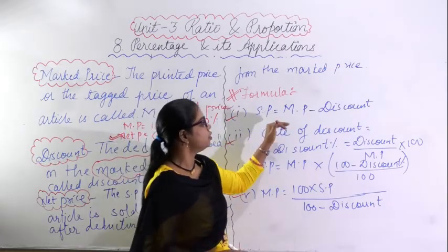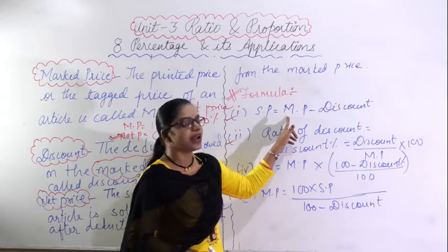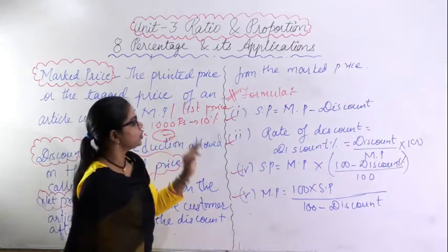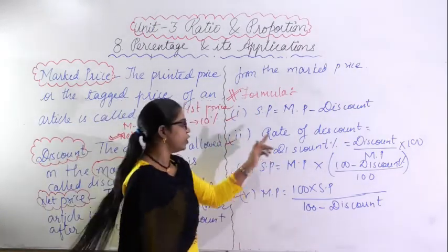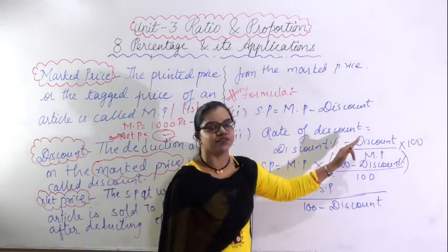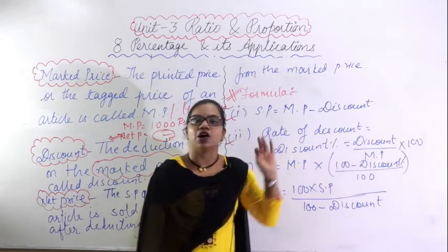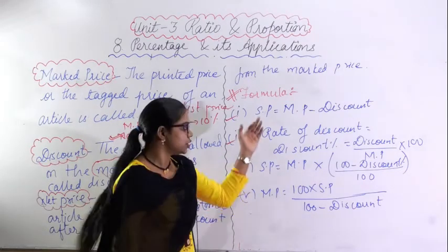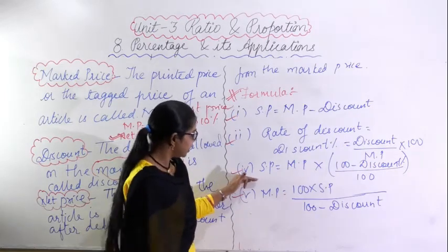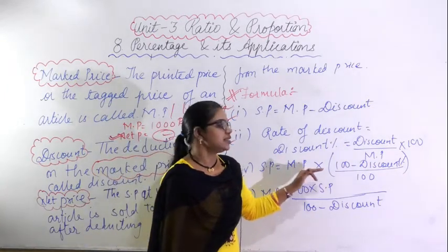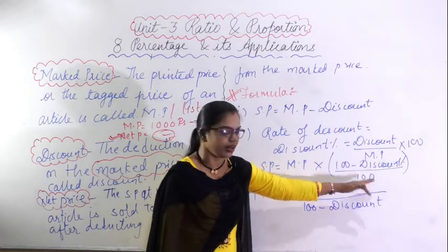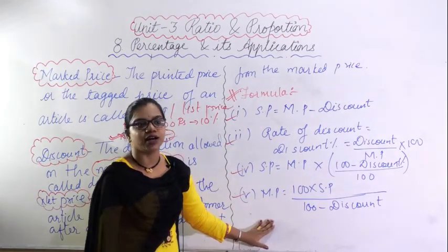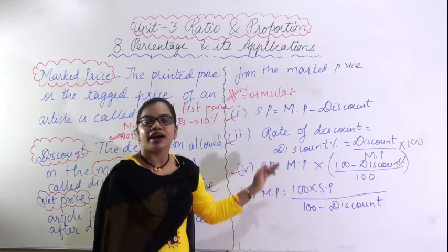Here are the key formulas: Selling price = Mark price minus Discount. Rate of discount percent = Discount upon Mark Price into 100. Also, Selling price = Mark Price into (100 minus Discount percent) upon 100. And Mark Price = 100 into SP upon (100 minus Discount). Note down these formulas; when you solve the exercise you will go through them and understand the concepts.